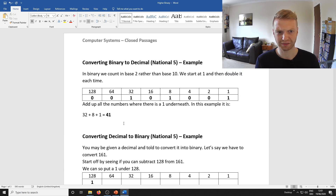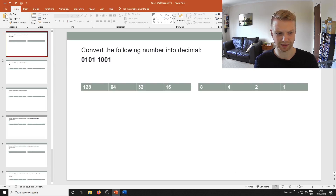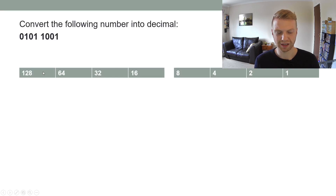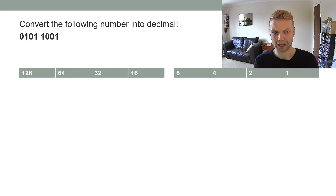First we're going to quickly revise National Five binary. I've got a guide here that I will put up online. Binary is just like how we count up in tens — one, ten, hundred — but instead you double it. Normally you do eight bits and you just keep doubling it that many times.